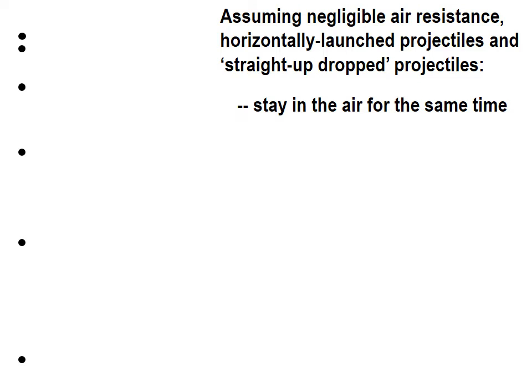Let's review here a little bit with a diagram. Assuming negligible air resistance, horizontally launched projectiles and straight-up dropped projectiles stay in the air for the same time. On the left, we have photographs taken of an object that has been dropped, with equal increments of time. If from that height we were to launch projectiles horizontally to the right and take time-lapse pictures, they would look something like that. The red one was launched horizontally with a small initial velocity; the purple one was launched with a rather large horizontal velocity. But all of those projectiles would hit the ground in the same time.